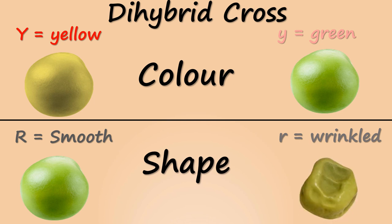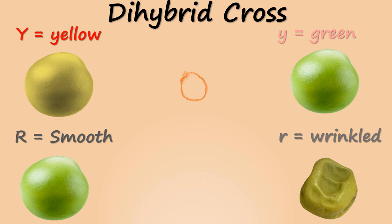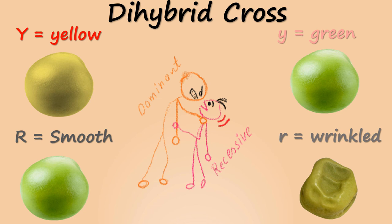The capital letters represent the dominant trait whereas the small letters represent the recessive trait. The dominant trait always masks the expression of the recessive trait. This means that if capital Y is present in the genotype, the color will be yellow irrespective of the presence or absence of the green allele.